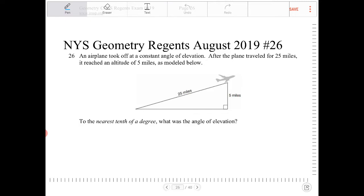So the angle of elevation is the angle formed between the horizontal and the incline. So that would be this angle over here.